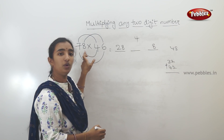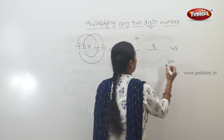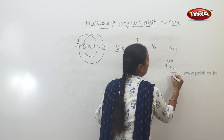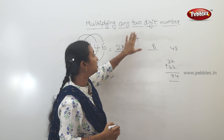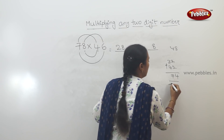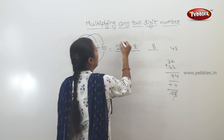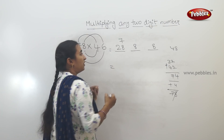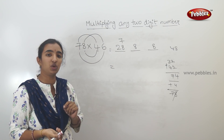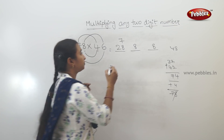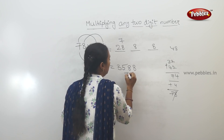Working through 78 into 46: 4, 8, 3, 2, and 4. Then 4, 7. The answer comes to 8, 9, 8 — meaning 3588.